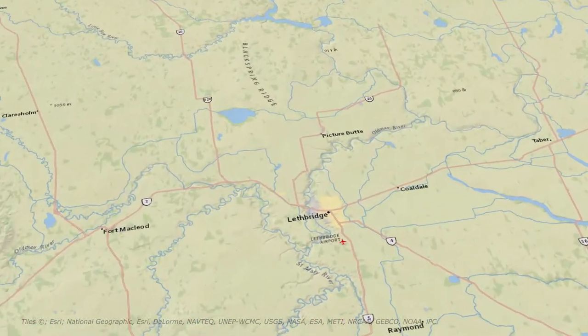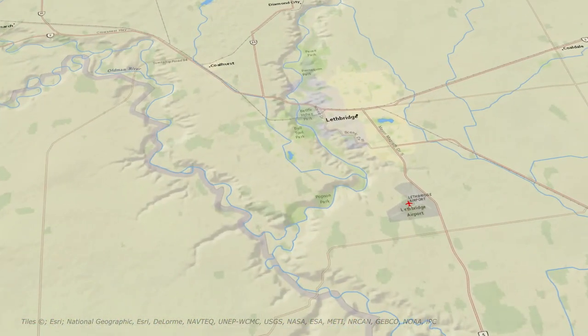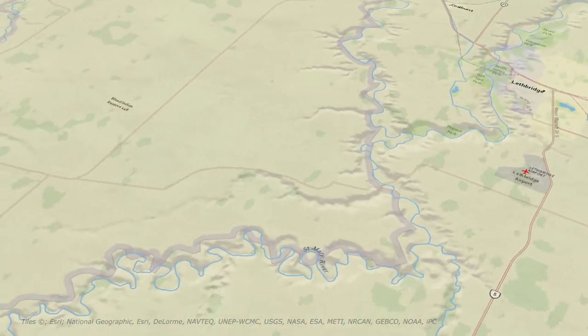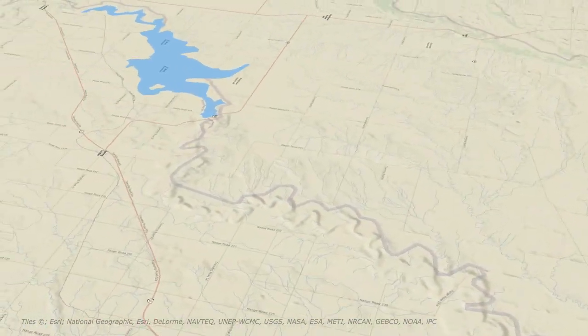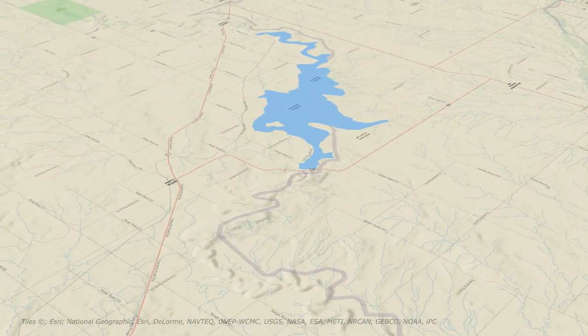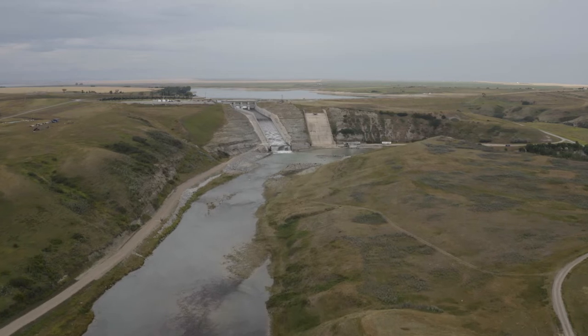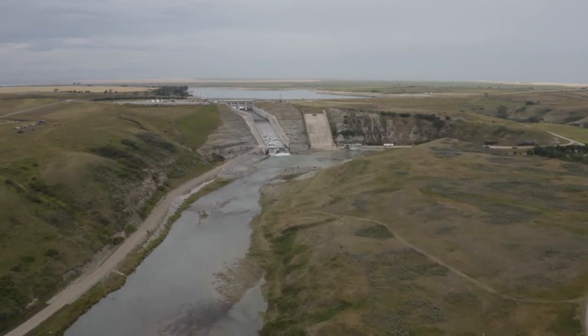The St. Mary Dam and Reservoir are located roughly 60 kilometers southwest of Lethbridge, Alberta. Since construction of the dam in the 1950s, water has been impounded in the large reservoir for irrigation use.